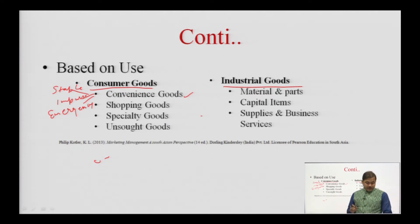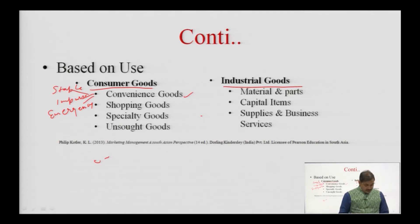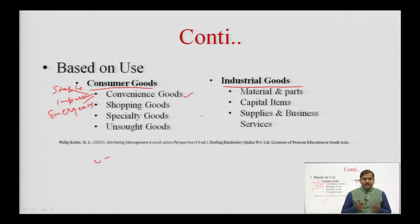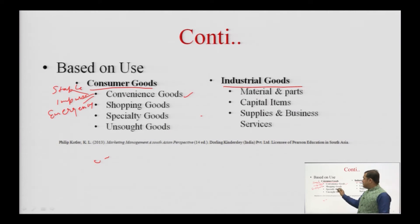The next category is shopping goods. Shopping goods are bought less frequently; consumers gather a lot of information before making a buying decision. They compare products on the basis of suitability, quality, price, and style. The best examples are garments and furniture — we look at suitability, style, requirement, quality, and price before purchasing.